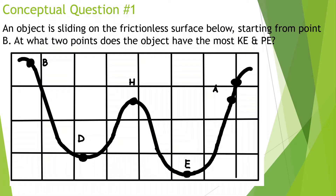An object is sliding on a frictionless surface, starting from point B. At what two points does the object have the most kinetic energy and potential energy? We can think of it like a ball rolling through this whole course. Kinetic energy is equal to one half mv squared, so kinetic energy is dependent on speed — how fast it's going. It's going to be going the fastest at point D and point E.